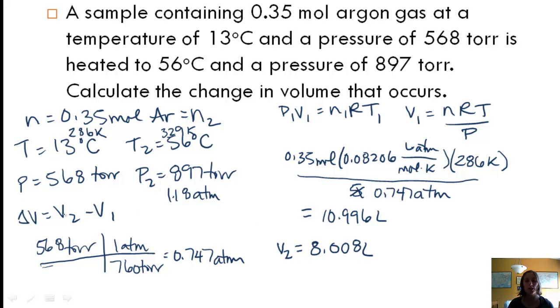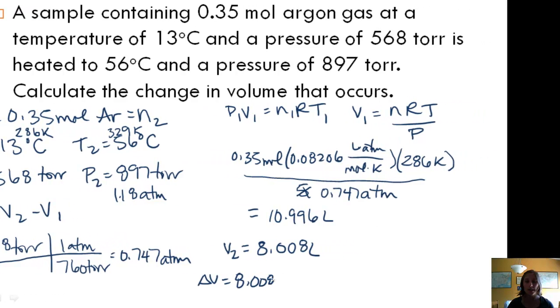Now remember we said change was V2 minus V1. So change in volume is 8.008 liters minus 10.996 liters. That's going to give me approximately with rounding and significant figures negative 0.30 liters. So what this means is that the volume decreased. We went from a volume of almost 11 liters to a volume of 8 liters. So when you want the change, if it's negative that just means the volume decreased.